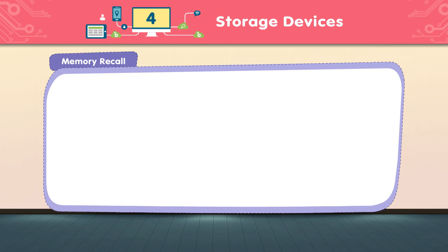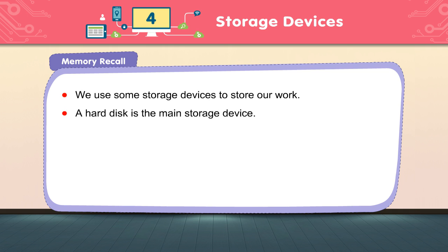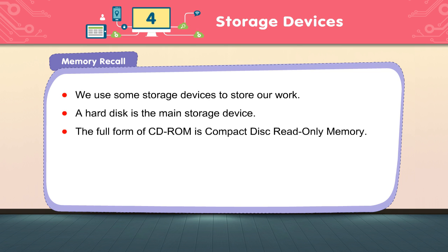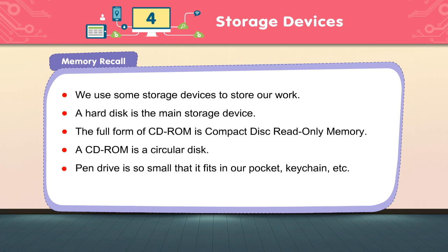Memory Recall. First, we use some storage devices to store our work. Second, a hard disk is the main storage device. Third, the full form of CD-ROM is Compact Disc Read-Only Memory. Fourth, a CD-ROM is a circular disk. Fifth, the pen drive is so small that it fits in our pocket, keychain, etc.